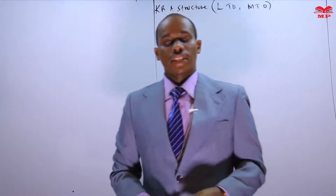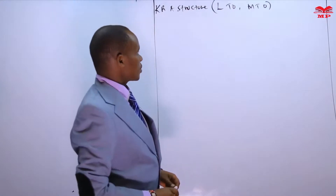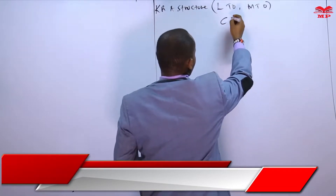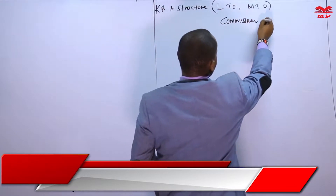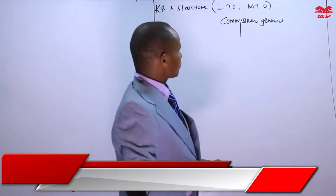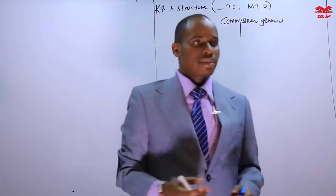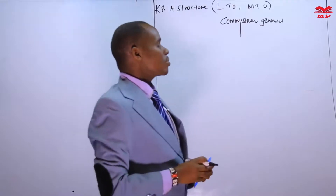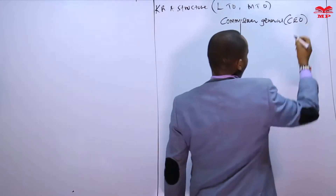KRA is managed and headed by commissioners. At the top, we have somebody by the name of Commissioner General. In each and every revenue authority of any country, we must have the Commissioner General who coordinates what is happening and represents that particular agency. Sometimes we also refer to him as the CEO of KRA.